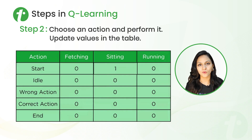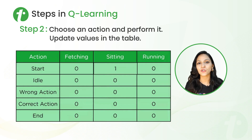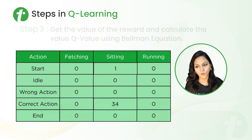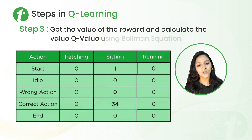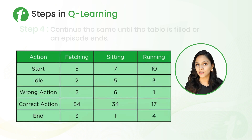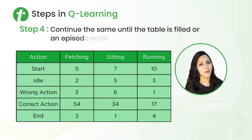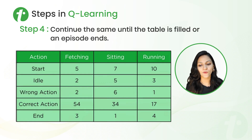Every action has some attached reward, and using that reward we calculate the Q-value. The next step is to get the value of the reward and calculate the Q-value using the Bellman equation, update that value in the Q-value table, and continue the same until the table is filled or an episode ends. Here we have the final Q-value table, which we use to trace the best optimal path.